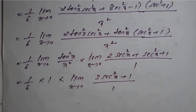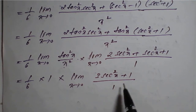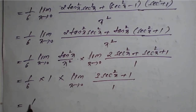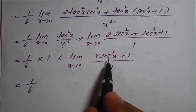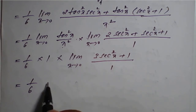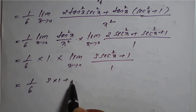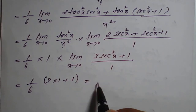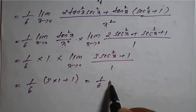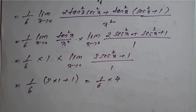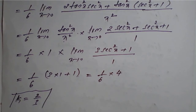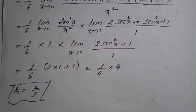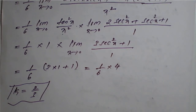This is no longer a 0 by 0 or infinity by infinity form, so we directly apply the limit. Substituting x equal to 0: secant 0 is 1, so it becomes 1 upon 6 times (3 into 1 plus 1) equals 1 upon 6 times 4 equals 4 by 6, which is 2 by 3. Therefore the value of k is 2 by 3, which is the required solution of the given limit. This example is very important for examination.